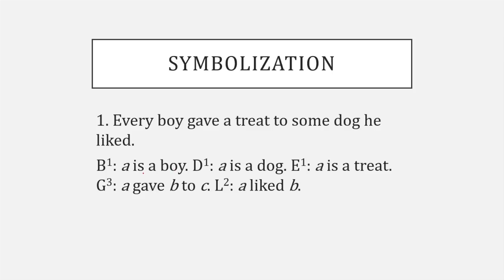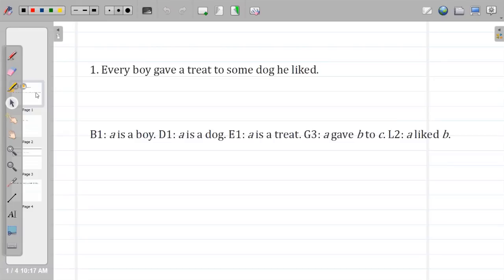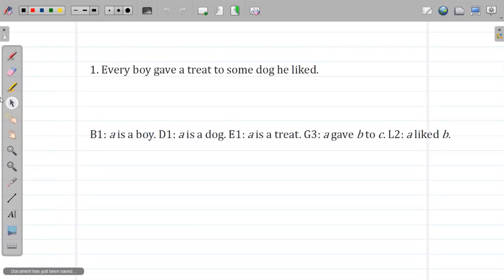There was some confusion about this on test two, so I want to get really clear on what this is asking before we do the exam. Let's do this example and be very clear so there's no confusion. I have a few examples we can work through — I haven't actually solved these ahead of time, so we're doing this live. I might need your help.